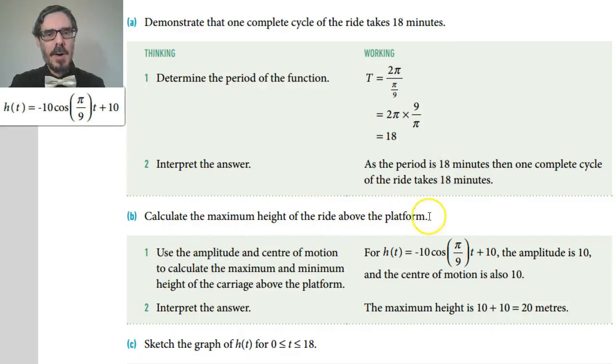Calculate the maximum height of the ride above the platform. Well the maximum height is from the bottom to the top. It's double the amplitude. This number out the front is my amplitude which is 10. That's from the bottom to the middle and from the middle to the top. So the maximum height is actually 10 + 10 = 20 meters.